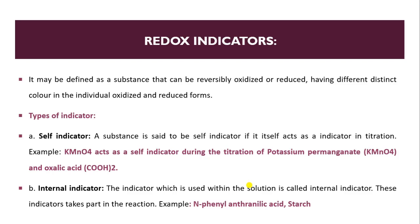Now we will see the redox indicator. What are redox indicators and what are the types of redox indicators? Redox indicator is a substance that can be reversibly oxidized or reduced, having different distinct colors in the individual oxidizing and reduced forms. We will see what are the types of oxidation reduction indicators with examples.